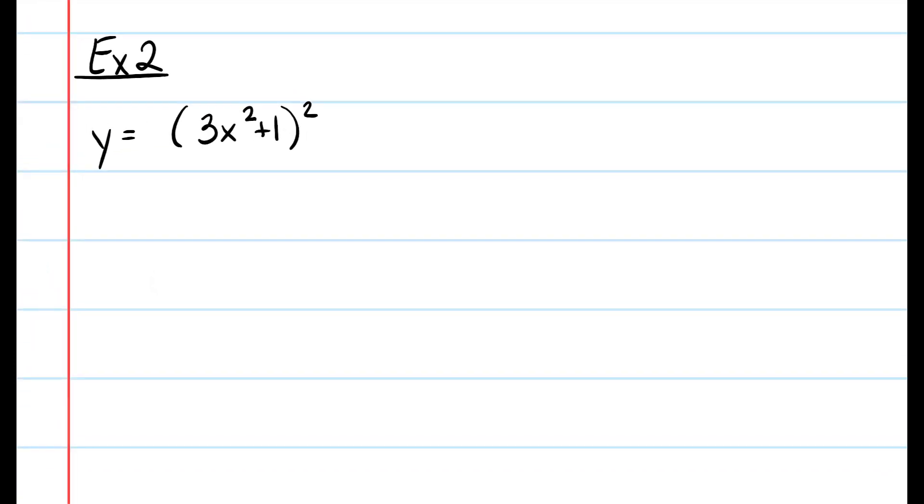So I have two big functions going on here. I have my inside function which is 3x squared plus 1 and then I have my outside function which is something the quantity squared. So I'm going to let y be equal to u squared and I'm going to let u equal 3x squared plus 1.